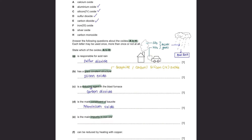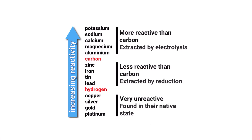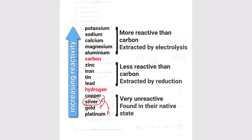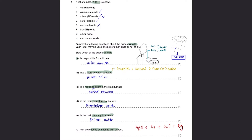So the answer for E is silicon oxide. Last question F: Which oxide can be reduced by heating with copper? According to your reactivity series, copper can only displace silver, gold, and platinum. Therefore, a metal oxide that can be reduced by heating with copper would be silver oxide.